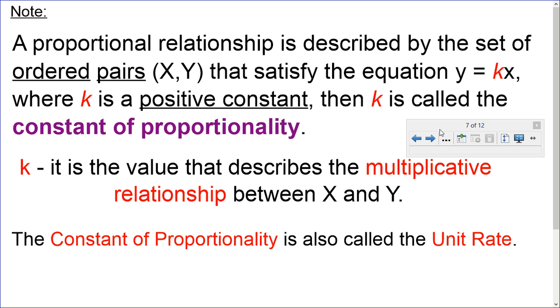So we talked about that equation, y equals kx, and we're now going to deal with that k, because that's called the constant of proportionality. k is the value that describes the multiplicative relationship between x and y. In other words, what's the number that's being multiplied by x to equal y? You have to figure that out. That's the trick to this. The constant of proportionality is also called the unit rate.